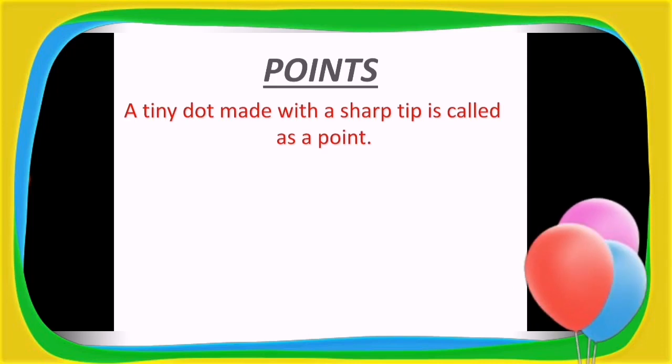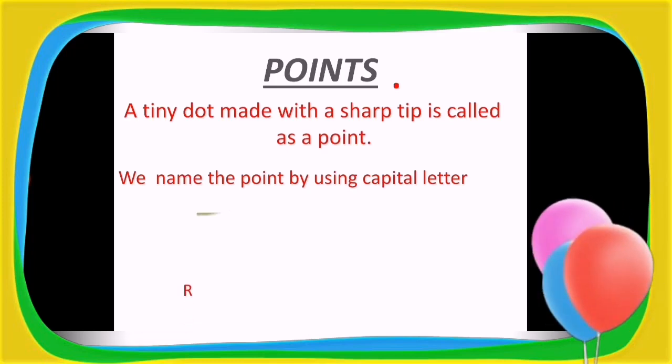A tiny dot made with a sharp tip is called as a point. Now let's learn how to write the name of this point. Usually we name the point by using capital letters. Let's have some example: point R. How to write the name of it? Simple: point R. For the next one it's point D, and we write it as point D.